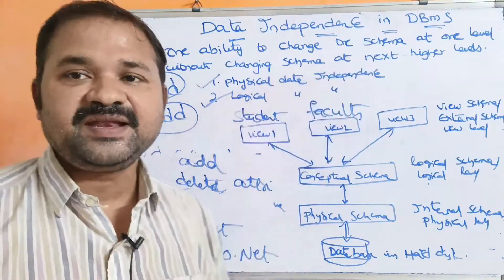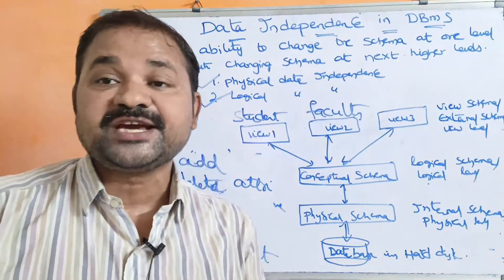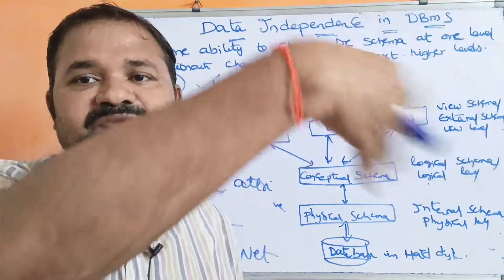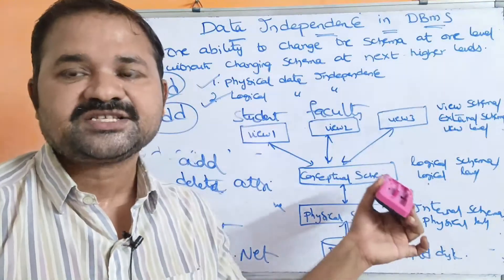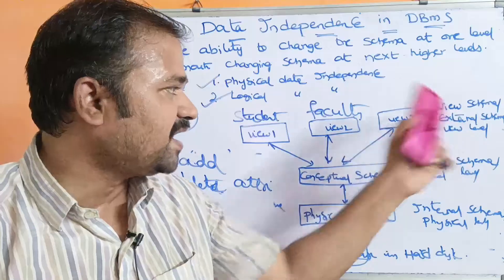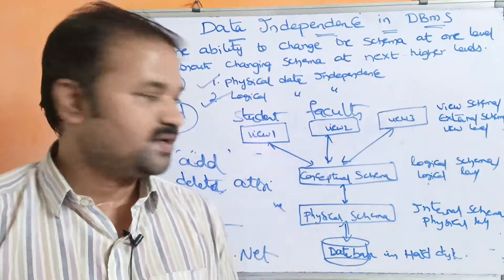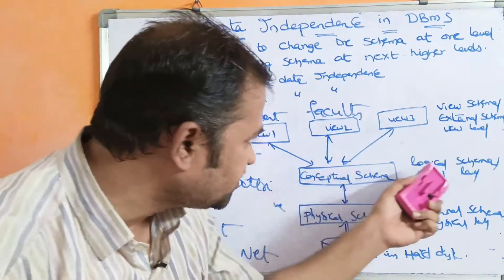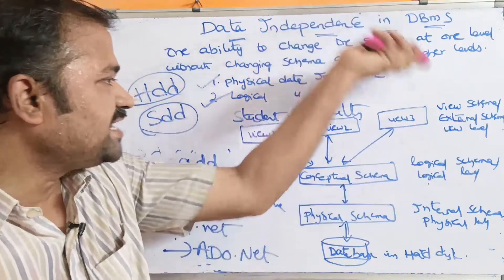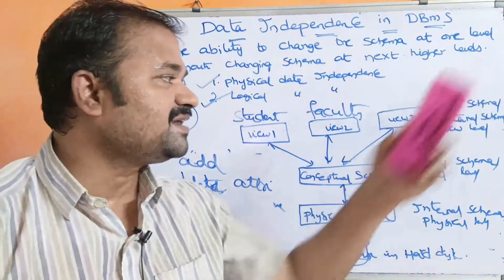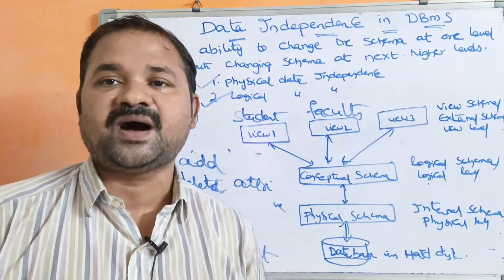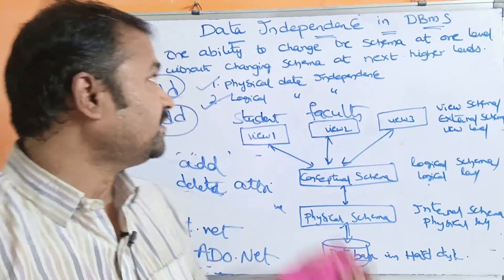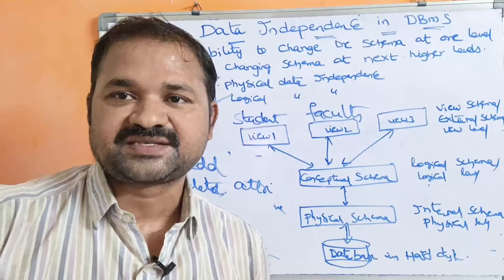In summary, physical data independence means the ability to change the physical schema without changing higher-level schemas such as logical schema and view schema. Logical data independence means the ability to change the logical schema without changing the view schema or application programs. This concludes data independence in DBMS.